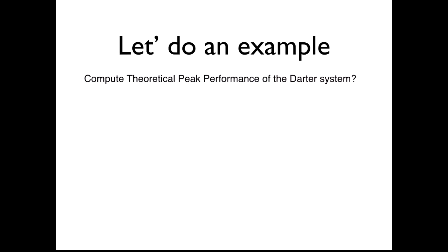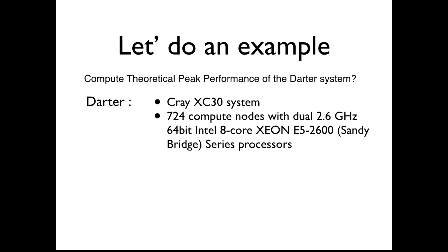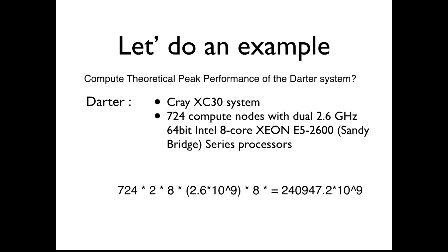Let's do a quick example. What would be the theoretical peak performance of the Darter supercomputer? Darter is the machine here at the University of Tennessee. It is a Cray system with 724 compute nodes, each with dual 2.6 GHz 64-bit Intel 8-core Xeon E5-2600 processors, also called Sandy Bridge. From this description, can we get the peak performance of the system — the theoretical maximum number of operations if everything were being used at perfect efficiency?